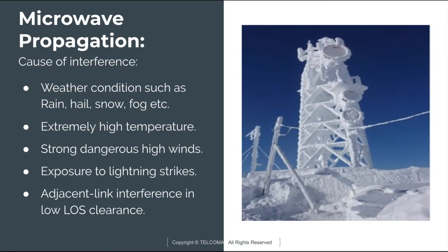Next we will discuss microwave propagation, specifically the causes of interference in microwave transmission. The first cause is weather conditions such as rain, hail, snow, and fog, which affect the transmission of microwave signals. Extremely high temperatures, strong winds, lightning strikes, and adjacent link interference in the line-of-sight clearance are additional factors. These various sources of interference can make microwave signal transmission impossible or cause significant attenuation.